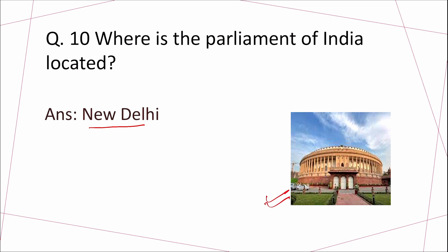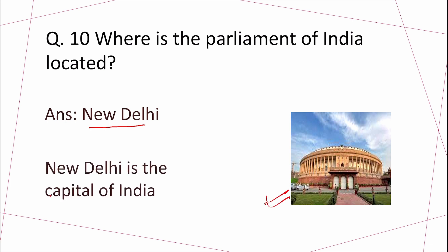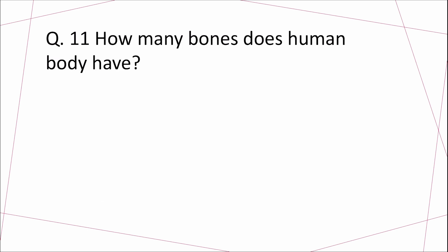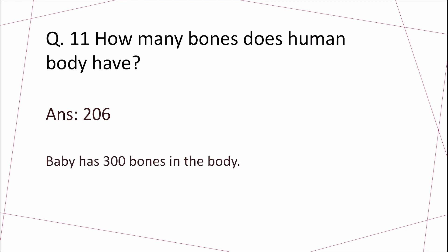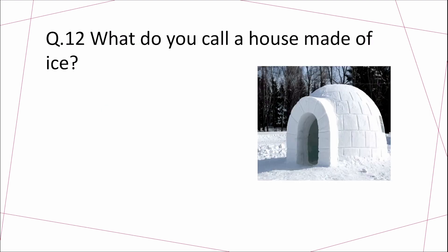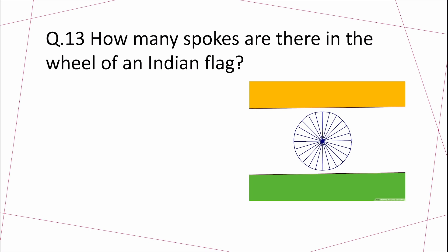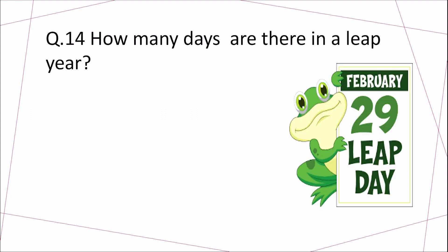Question 10: Where is the Parliament of India located? Answer: New Delhi. New Delhi is the capital of India. Question 11: How many bones does the human body have? Answer: 206. A baby has 300 bones in the body. Question 12: What do you call a house made of ice? Answer: An igloo.